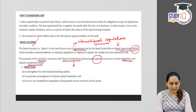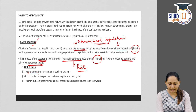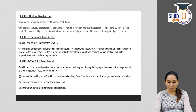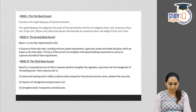Basel norms focus on risk to banks and financial institutions. The objectives are: first, to strengthen the international banking system; second, to promote convergence — that is, to bring uniformity in regulation; and third, to iron out competitive inequalities among banks across the world. There are three sets of Basel norms: Basel 1, 2 and 3.